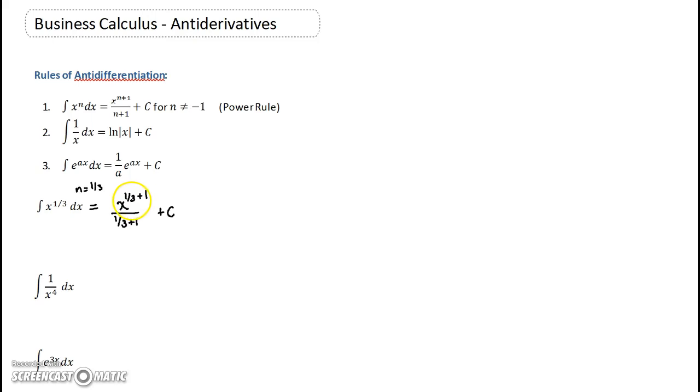Now this would be a little rude to leave it like this. We want to write it in a nicer way. So for example, if you would add this one, you can think about this as 3 thirds. So when you add it up, it's going to be x to the 1 third plus 3 thirds, so 4 thirds, and then divided by 4 thirds.